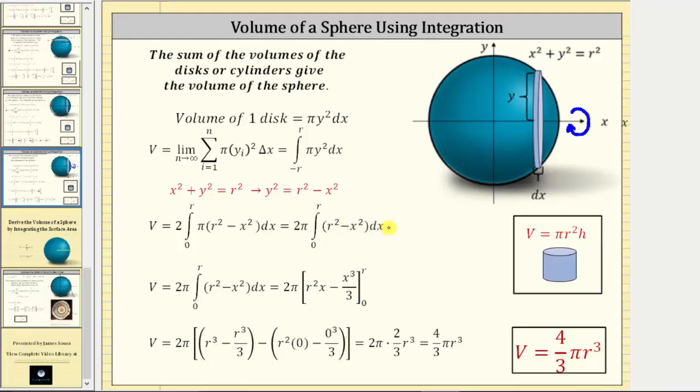For the next step, we integrate with respect to x, treating r squared as a constant. The antiderivative is r squared times x minus x cubed divided by three. Again, we have r squared x here because we treat r squared as a constant.